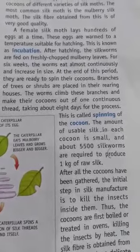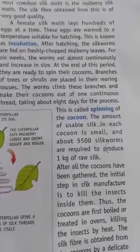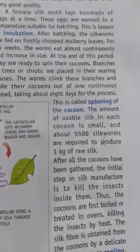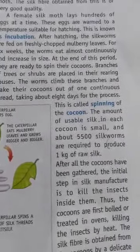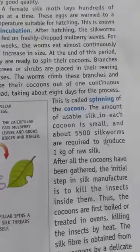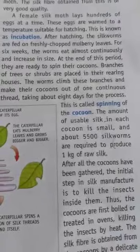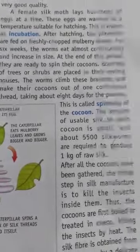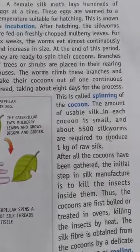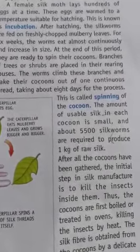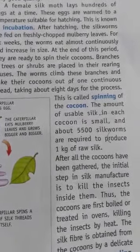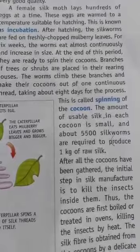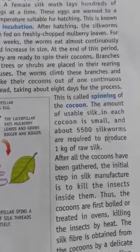The amount of usable silk in each cocoon is small, and about 5,500 silk moths are required to produce 1 kg of raw silk. For obtaining silk, silk moths are reared and their cocoons are collected to get silk thread. The cocoons are collected and boiled in water to kill the insect inside them; the resulting fiber is known as raw silk. The silk fiber separates out. The process of taking out fiber from the cocoon for use as silk is known as reeling the silk. Reeling is done in a special machine. Silk fibers are spun into silk threads, which are woven into silk cloth by weavers.